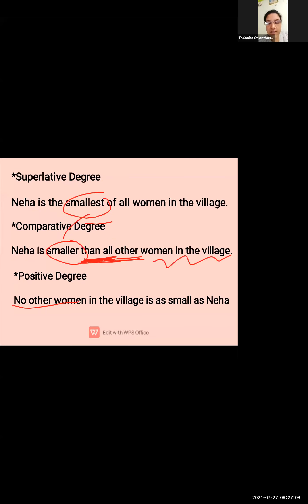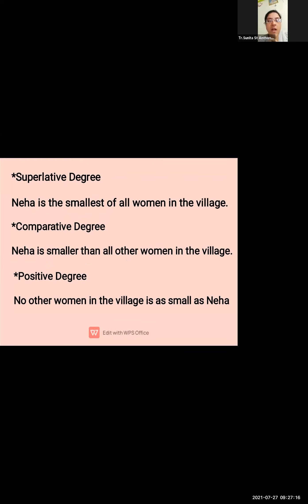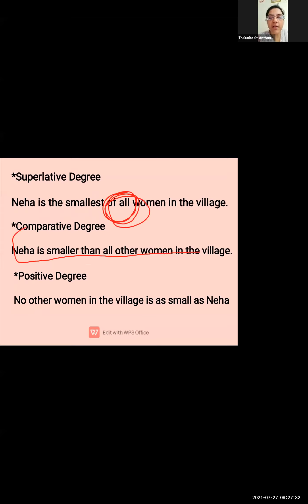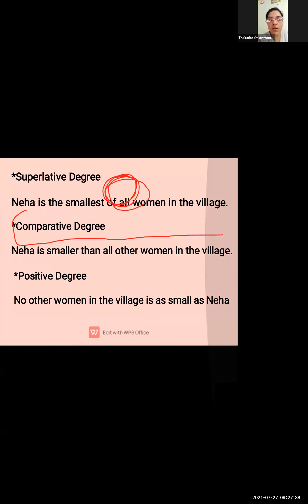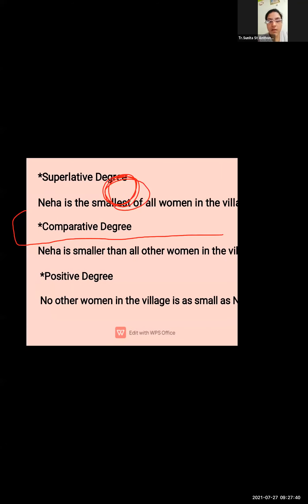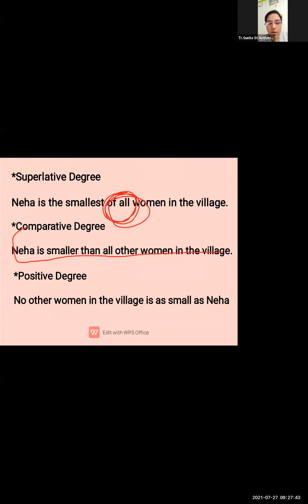The converted sentence is: Neha is smaller than all other women in the village. This is the example of superlative to comparative. We are dealing here only with superlative to comparative. If you find 'of all' in a superlative sentence, use this formula to convert it into comparative degree.